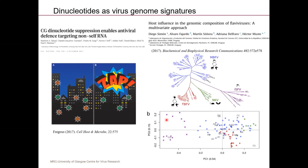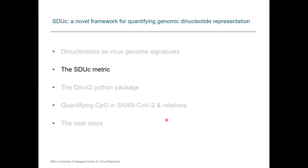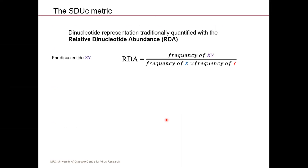Hopefully I've convinced you that something is going on with CpGs in viruses, and that begs the question: how do we quantify this genomic signature? The traditional way is fairly simple — most people call it the relative dinucleotide abundance. Overall it's just the odds ratio between the frequency of a dinucleotide XY and the product of the frequency of nucleotide X times the frequency of nucleotide Y.